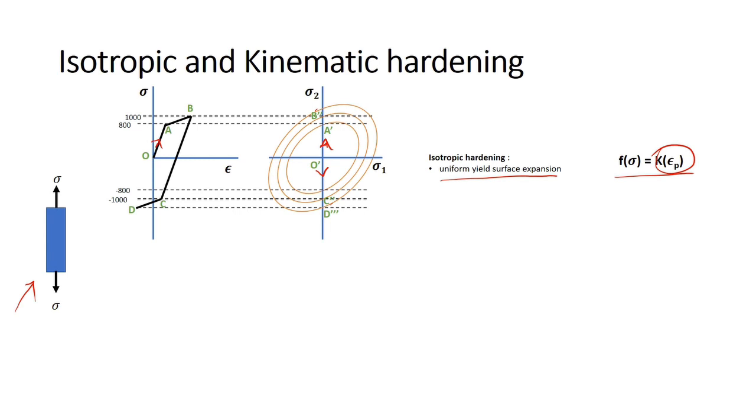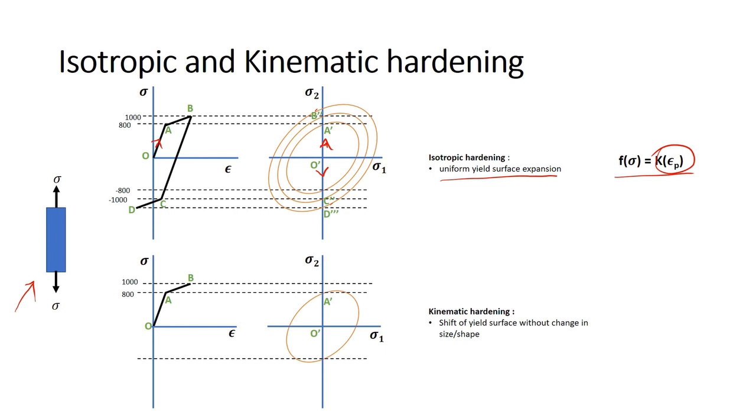Now let's see how the yield surface evolves in kinematic hardening. We will start from the same point shown here and load it to B. Unlike the previous one, kinematic hardening is characterized by a shift in the yield surface. The center of the ellipse shifts by alpha, here it will be 200, and alpha is known as the back stress. The new yield surface will look like this. As we gain some strength in tension, we lose some strength in compression. This asymmetry in tension and compression behavior is called the Bauschinger's effect.